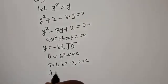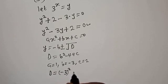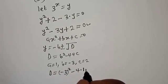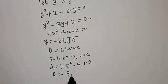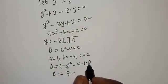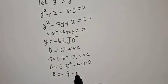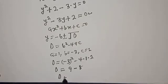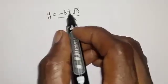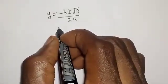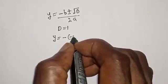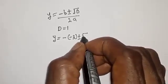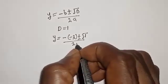Then d equals negative 3 squared minus 4 multiplied by 1 multiplied by 2. d equals 9 minus 8, so d equals 1. Then y equals negative b plus or minus square root of d, over 2a, with d equal to 1. So y equals negative bracket negative 3, plus or minus square root of 1, over 2 multiplied by 1.